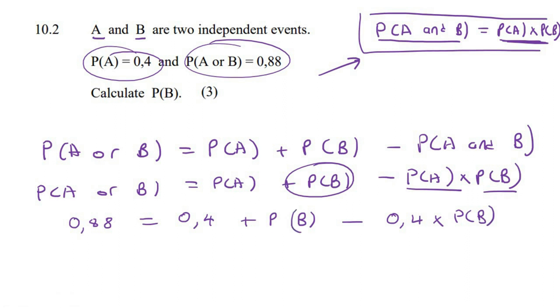So let's just write this a little bit better. Okay, so now we're just going to solve for P of B. So we can take this 0.4 over. So it becomes 0.88 take away 0.4. Here we have 1 P of B and here we have 0.4 P of B. So we're going to say 1 PB take away 0.4 PB.